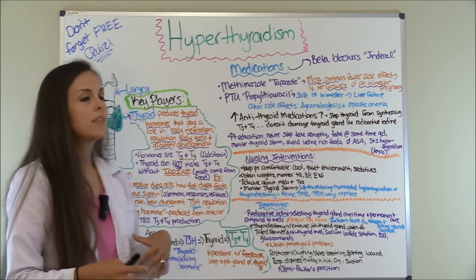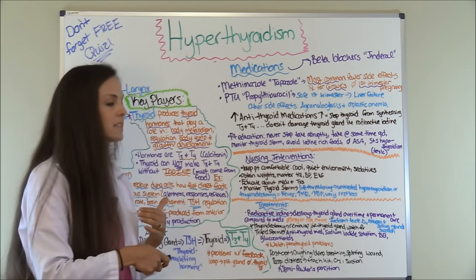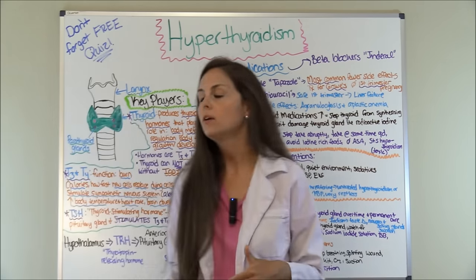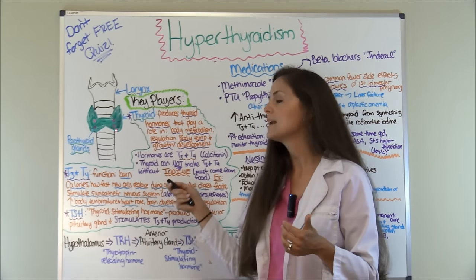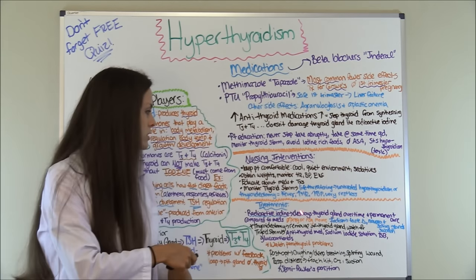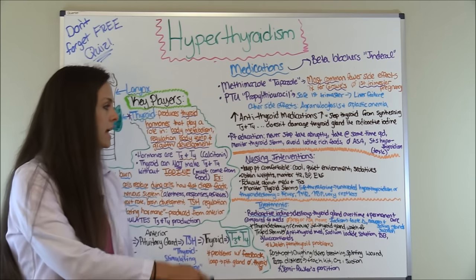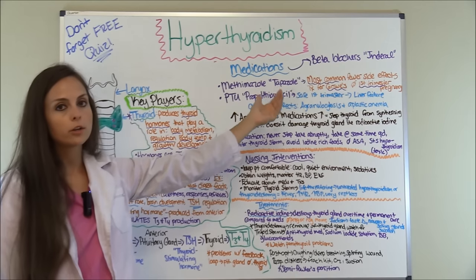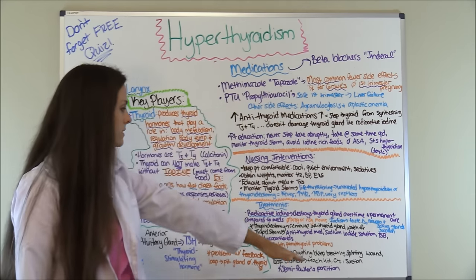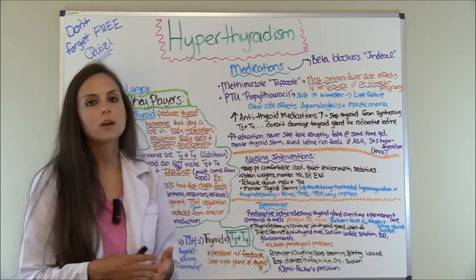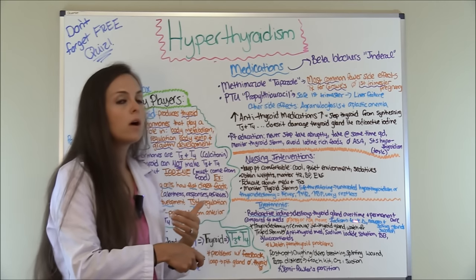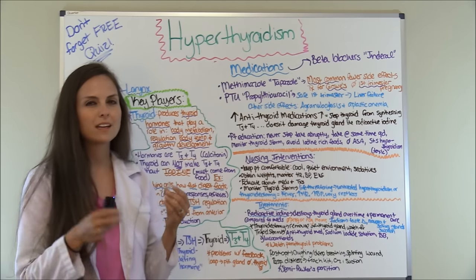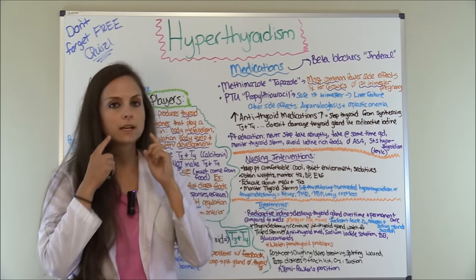Another treatment is radioactive iodine. The patient takes a capsule containing radioactive iodine — they swallow the pill, the iodine goes to the thyroid because the thyroid loves iodine, but this iodine is radioactive, so it destroys the thyroid gland over time. This is a permanent cure, unlike antithyroid medications. However, it is not for women who are pregnant or nursing due to the radioactive material. A side effect is iodism — taste changes like a metallic taste in the mouth, nausea, or swollen salivary glands.